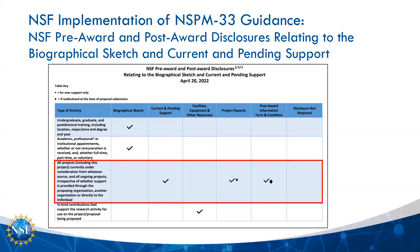I want to call out an important box highlighted in red: all projects, including this project, currently under consideration from whatever source, and all ongoing projects irrespective of whether support is provided through the proposing organization, another organization, or directly to the individual. Every single word here is important. A lot of faculty forget to include this project, but NSF uses current and pending support to assess whether the individual has the capacity to carry out the research as proposed, as well as any overlap or duplication with funding activities.